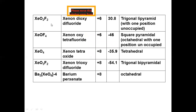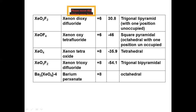Xenon dioxide difluoride (XeO₂F₂): oxidation state is plus six, melting point is 38.6°C, and structure is trigonal bipyramid with one equatorial position unoccupied. Xenon oxytetrafluoride (XeOF₄): oxidation state is plus six, melting point is negative 46°C, and structure is square pyramidal.